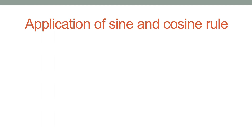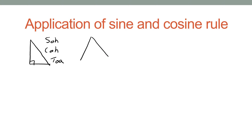Application of the sine-cosine-side rule. First, a quick recap: if it is a right-angle triangle, you use SOH-CAH-TOA to solve the problems. If it is a non-right-angle triangle, you have two choices — you either use the sine rule or the cosine rule.